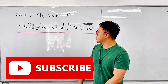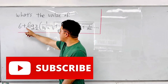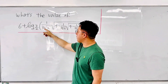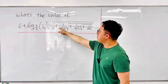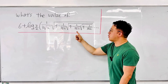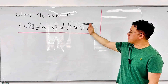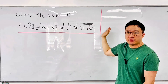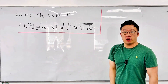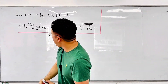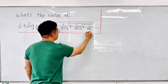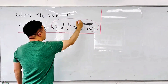Okay, here's the question. What's the value of 6 plus log with base 3/2, and the argument is 1 over 3√2 times the square root of 4 minus 1 over 3√2 times the square root of 4 minus 1 over 3√2 times the square root of the same expression — so we have an infinite nested radical inside the argument.